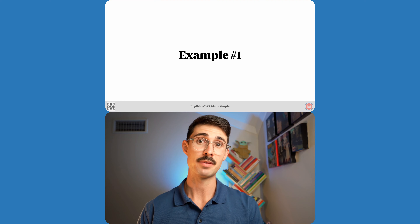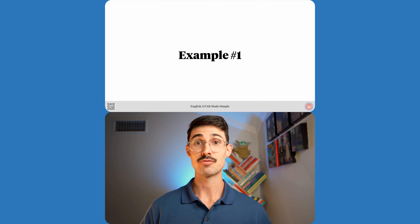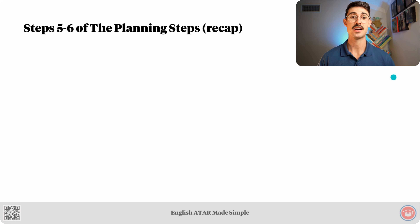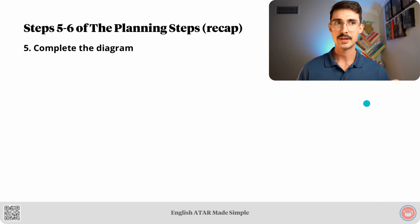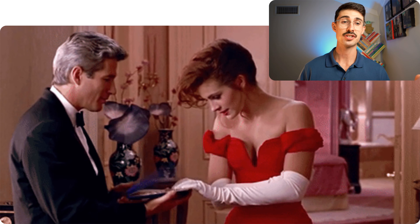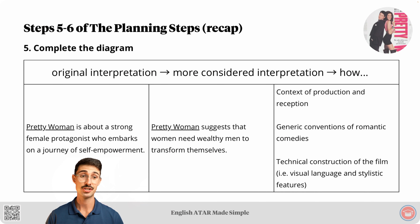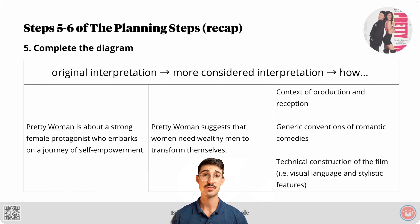Now let's take a look at our first example. Example number one is the same example we looked at in the lesson on planning. The relevant question is: discuss how you developed a more considered interpretation of a text by reflecting on at least one different reading of it. We looked at the text Pretty Woman in relation to this question. My original interpretation is that Pretty Woman is about a strong female protagonist who embarks on a journey of self-empowerment. This then leads to my more considered interpretation: Pretty Woman suggests that women need wealthy men to transform themselves.